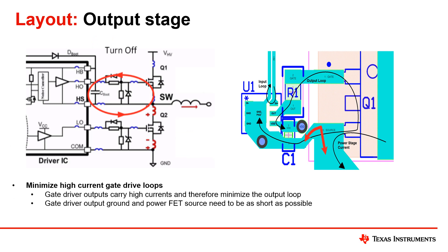For the output stage, you would want to minimize high current gate drive loops. Since the outputs carry high current, it is important to minimize the output loop to avoid any parasitics. The loop is shown by the red circle on the picture on the left, and the green boxes highlight some of the parasitics that you can minimize. The black line on the picture on the right shows another view of the gate drive loop. It is also important to note that the driver output ground and power fed source needs to be as short as possible.